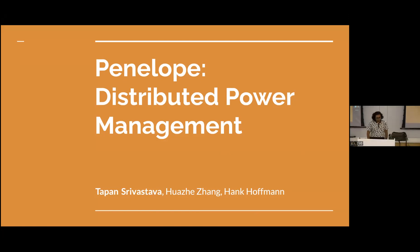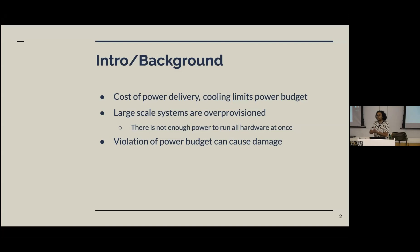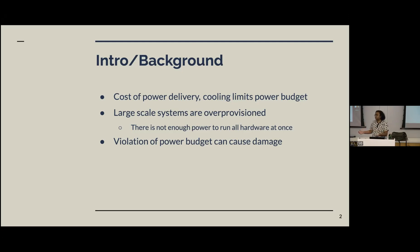Today I'm going to be talking about decentralized peer-to-peer power management in large-scale distributed systems. So just some background: in most data centers, supercomputers, and things like that, between the cost of power delivery and the cost of cooling hardware, power budgets are pretty limited. It's a lot of money to supply all of these things, and they require a lot of power. So with a number of different constraints, especially given power generation limitations, data centers need to operate at really tight power budgets.